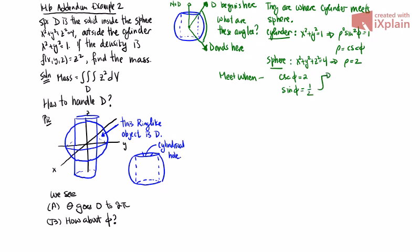And this occurs at pi over 6 and 5 pi over 6. Pi over 6 is the upper one and 5 pi over 6 is the lower one. So what that tells us is that phi goes from pi over 6 to 5 pi over 6.